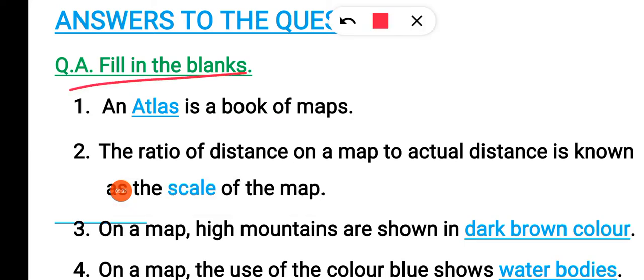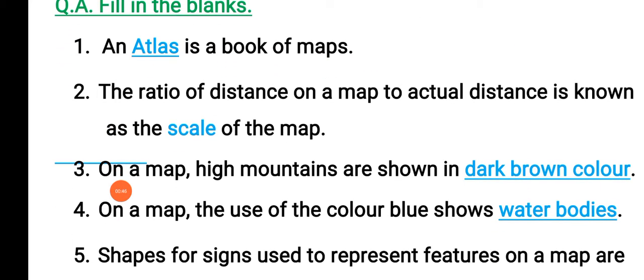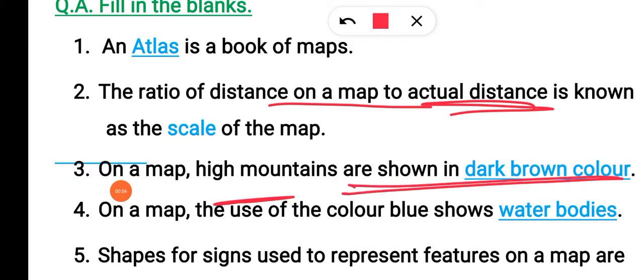First exercise: fill in the blanks. Students, the book of maps is known as Atlas. Atlas is the book of maps. When many maps are collected together in a book, we call it an Atlas. The ratio of distance on a map to actual distance - what is the distance on the map and what is the actual distance - this is called the scale of the map.